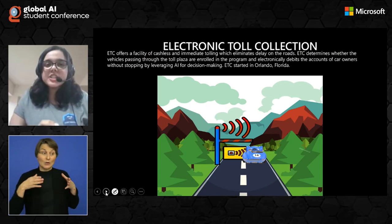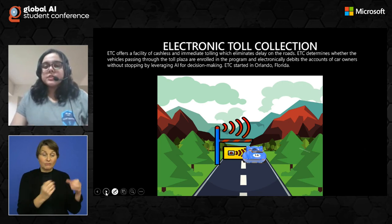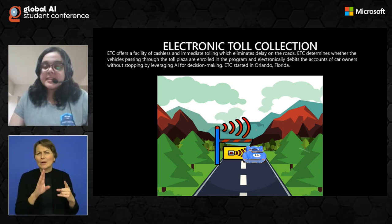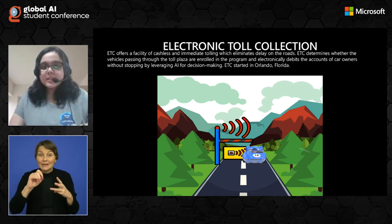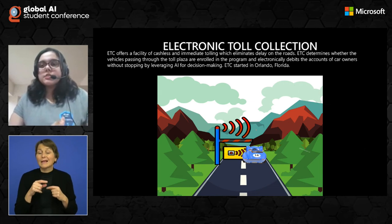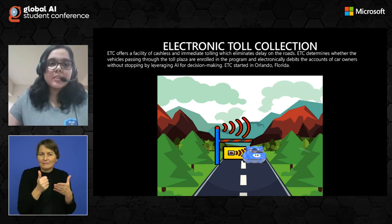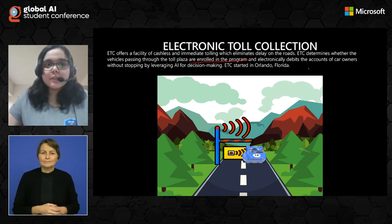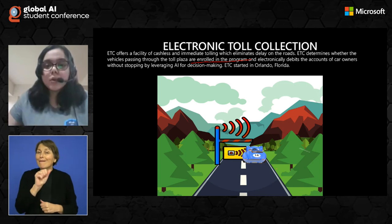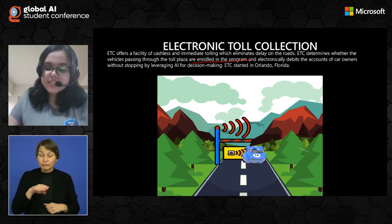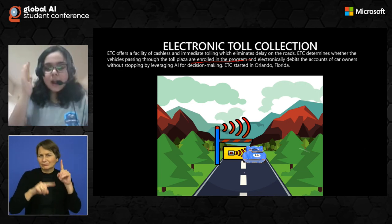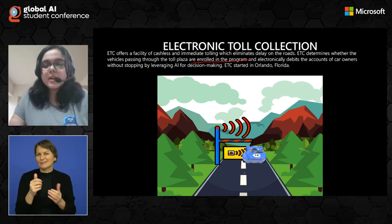As soon as a vehicle passes through an electronic toll collection booth, it uses services like Bluetooth, image recognition, embedded systems, and IoT to analyze what sort of vehicle is passing through. It then accesses the account details of the driver and deducts the required toll charges. ETC determines whether vehicles passing through the toll plaza are enrolled in the program and electronically debits the accounts of car owners without stopping, by leveraging AI for decision making. AI understands what sort of vehicle is passing through because rates proportionately differ for cars and buses — public transportation rates are definitely lower than those for private transportation.